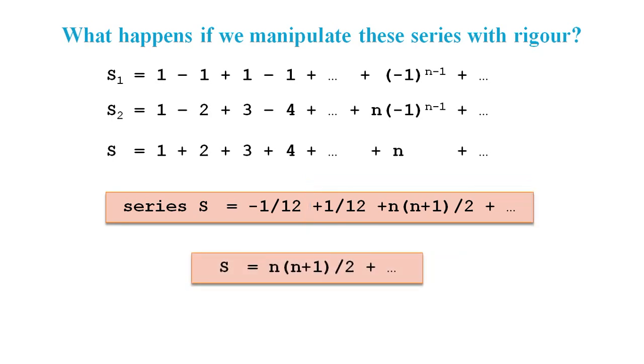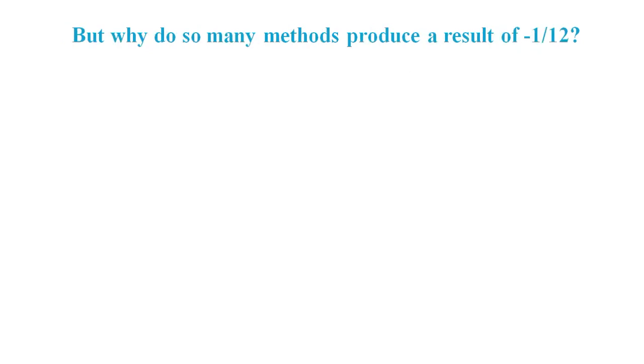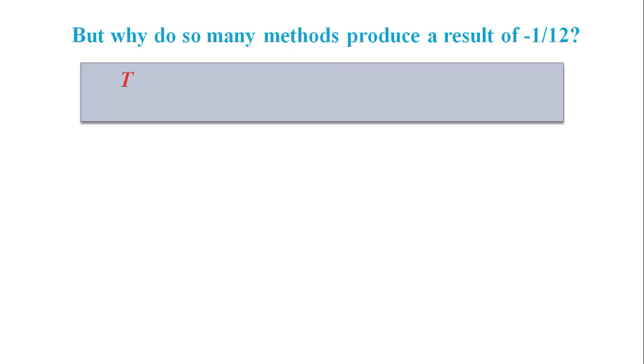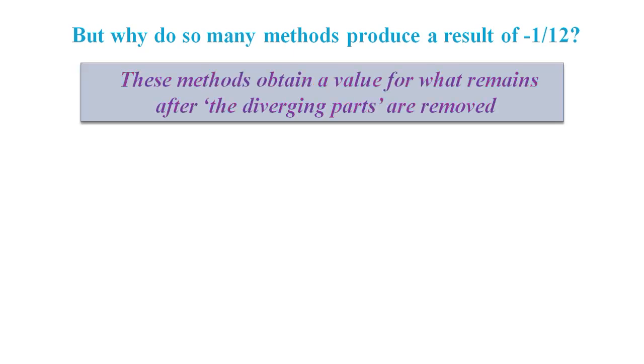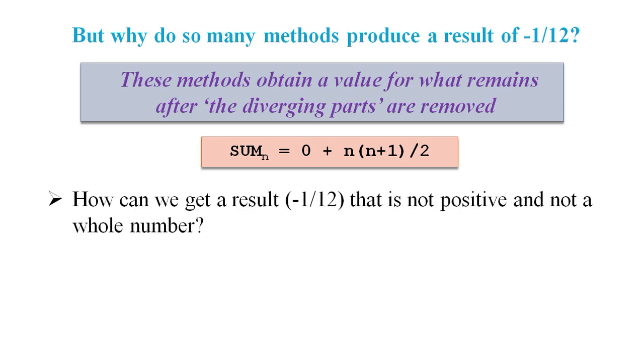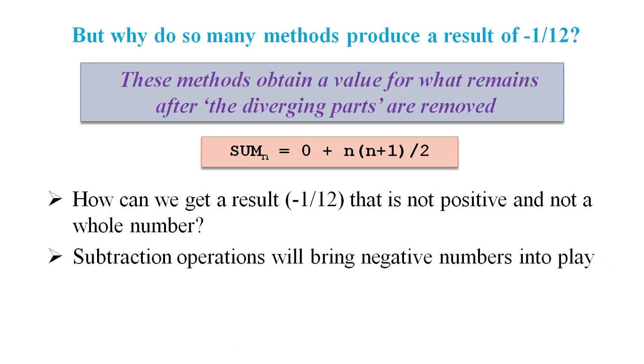But what about other methods that get this -1/12 result? Well, these methods are all trying to assign a value to a diverging series by removing the diverging parts. Now we can see from the partial sum that removing the diverging part leaves 0, not -1/12. So there is still the question of how these methods can examine the sum of positive whole numbers and end up with a non-positive, non-whole number result. Well, subtraction operations will bring negative numbers into play, and division operations will take us out of the realm of whole numbers.